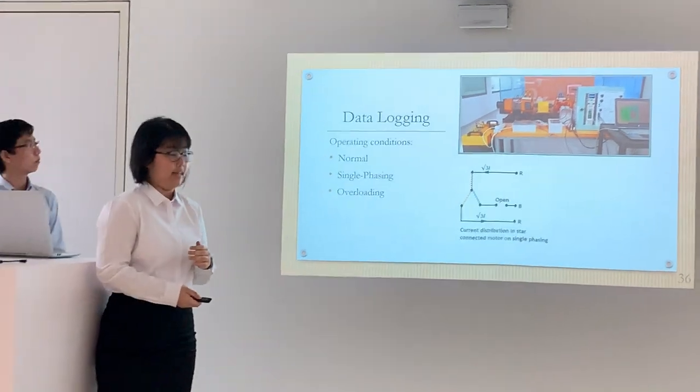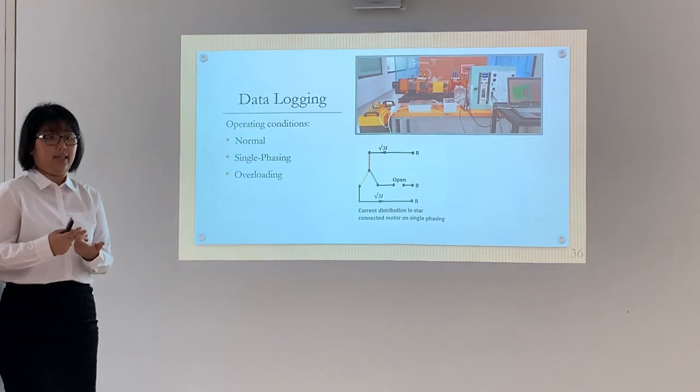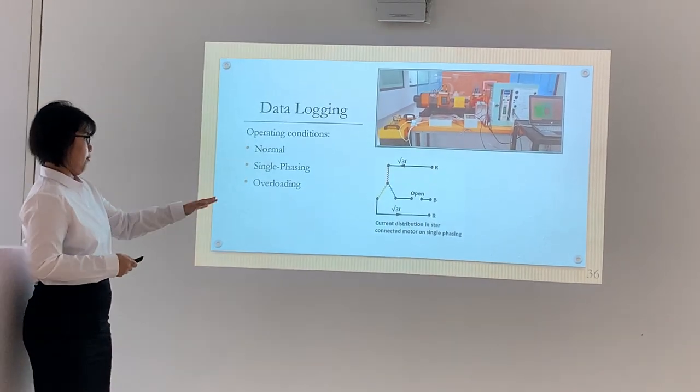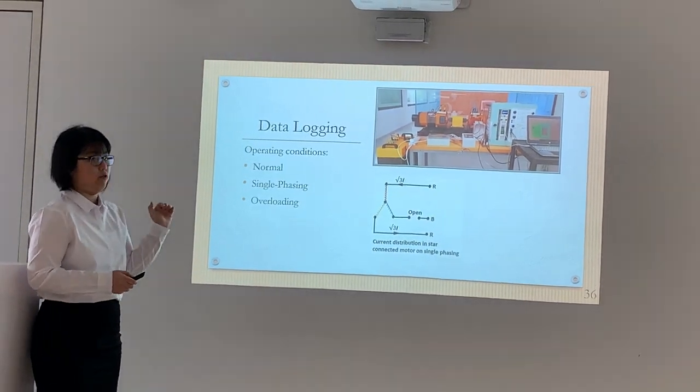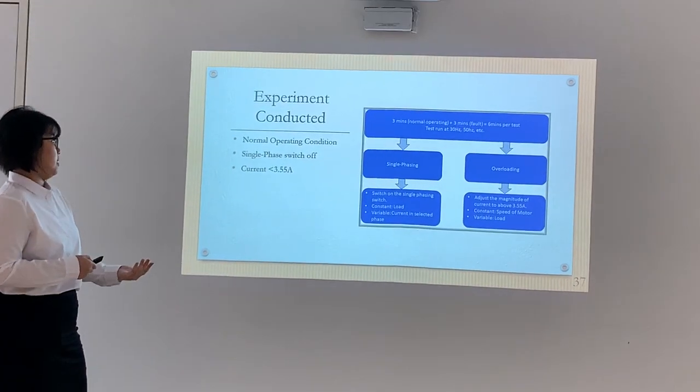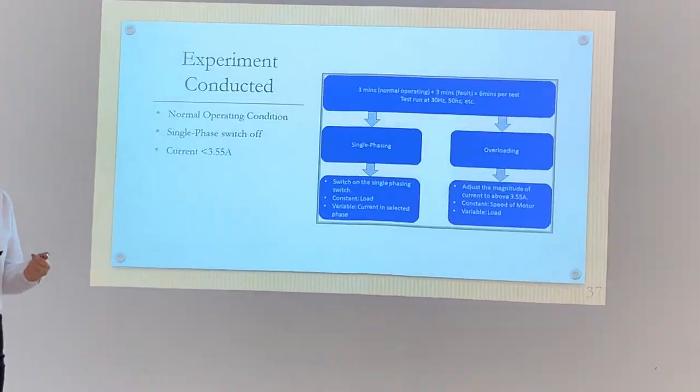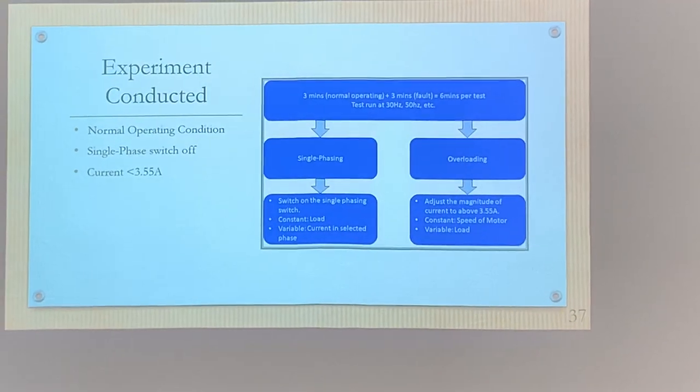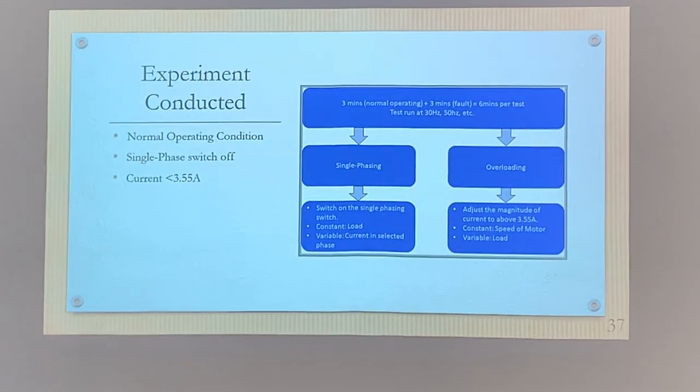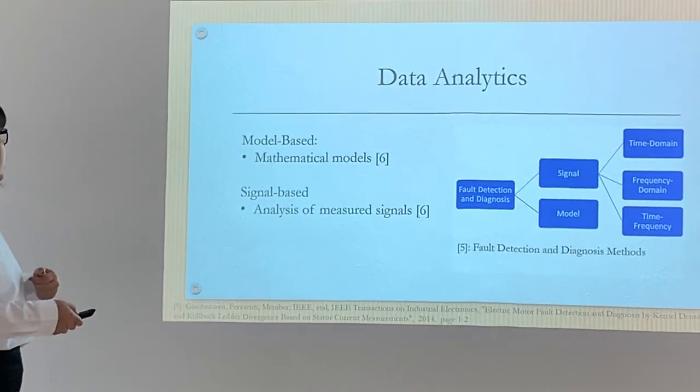I'll be talking about data logging and analysis. We take readings in three conditions: normal, single phasing, and overloading conditions. The last two are fault conditions. For single phasing, this diagram shows that in one of the phases there is no current going through, which is an open circuit. For the single phasing test, the constant is the load and the variable is the current in the selected phase. In the overloading test, the current will be adjusted above 3.5 amperes. The constant is the speed of the motor and the variable is the load.